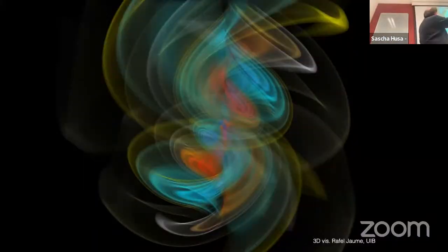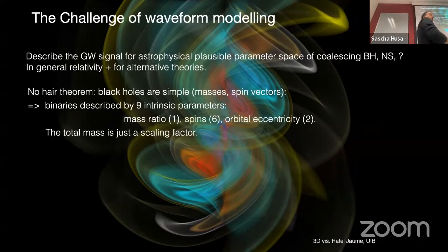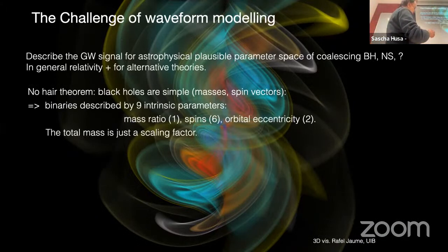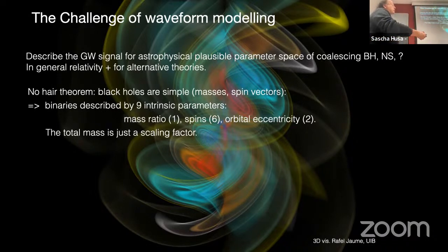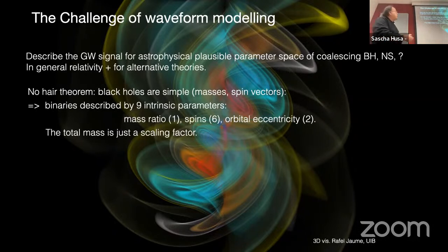This is a snapshot from a numerical simulation of the Einstein equations, which is very beautiful — it shows how the signal travels through curved spacetime. What we really want is to have the longest signals covering the whole inspiral and coalescence across the astrophysically plausible parameter space of all binaries of black holes, neutron stars, maybe more exotic objects, in general relativity and alternative theories. The no-hair theorem tells us that black holes are very simple objects, described just by their masses and spin vectors.